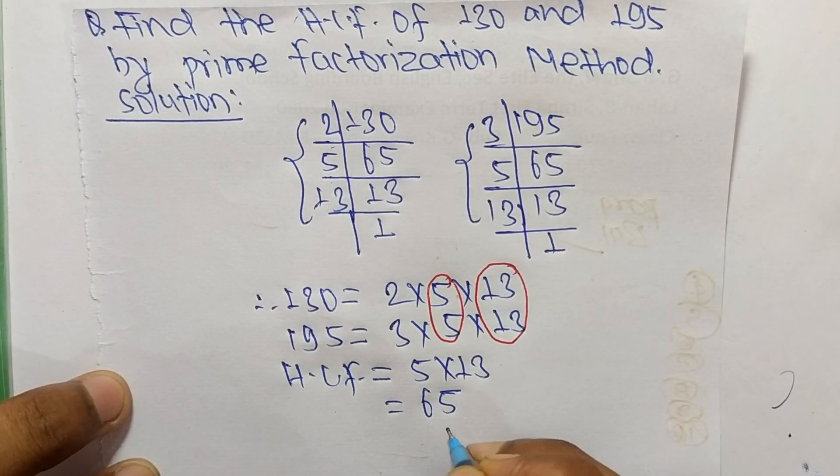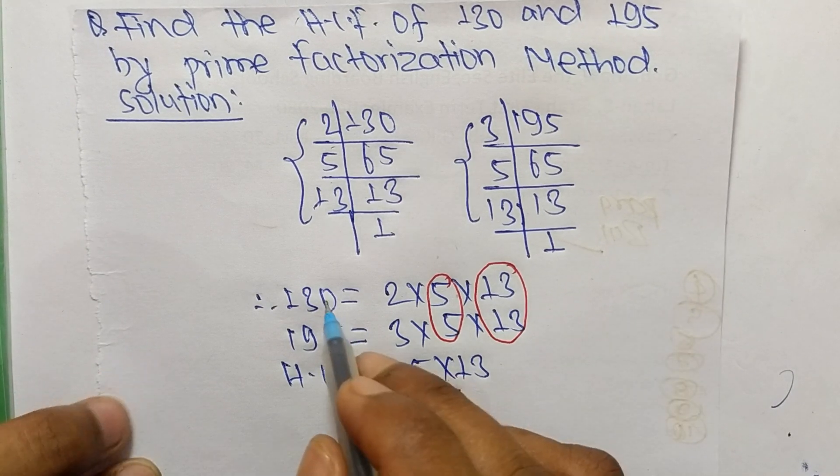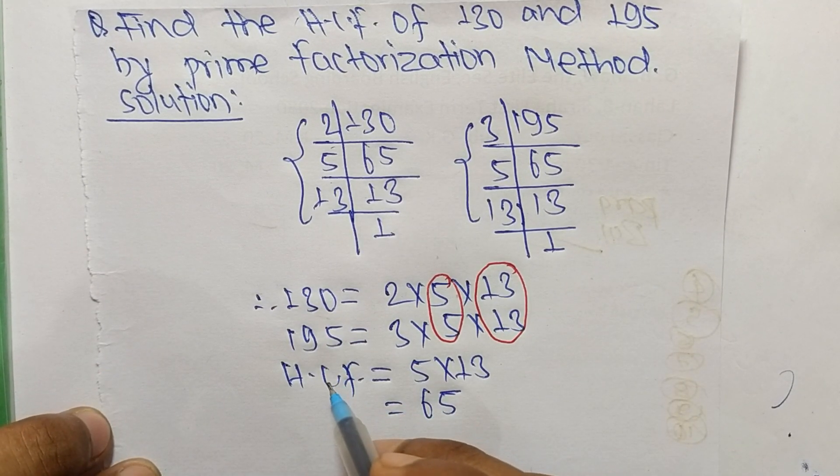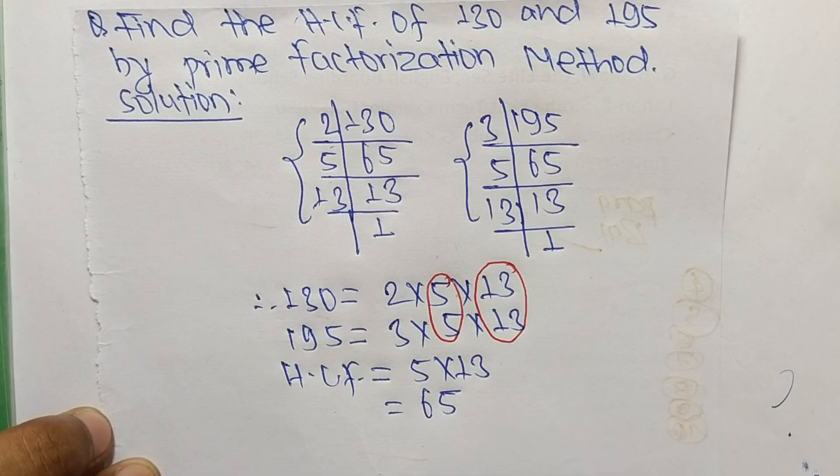So 65 is the HCF of 130 and 195. That's all for today and thanks for watching.